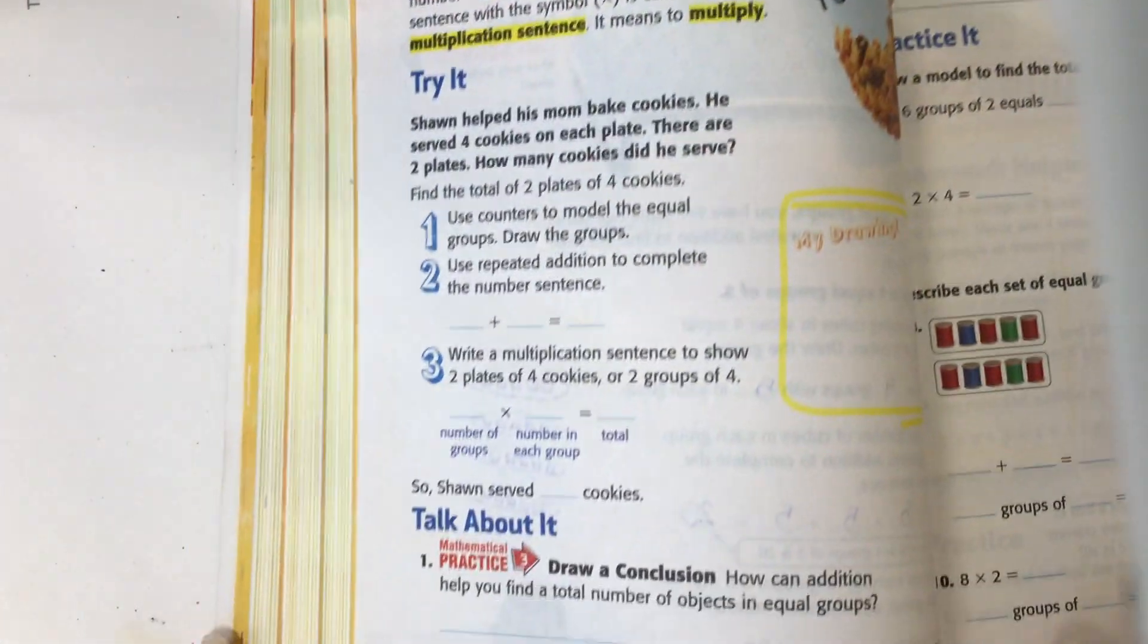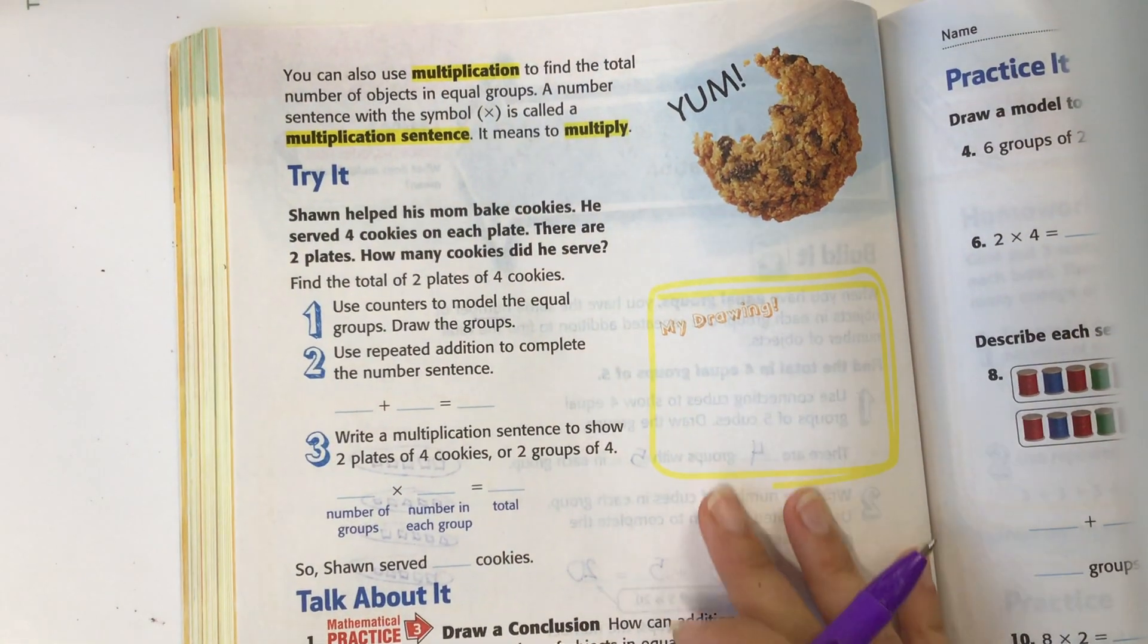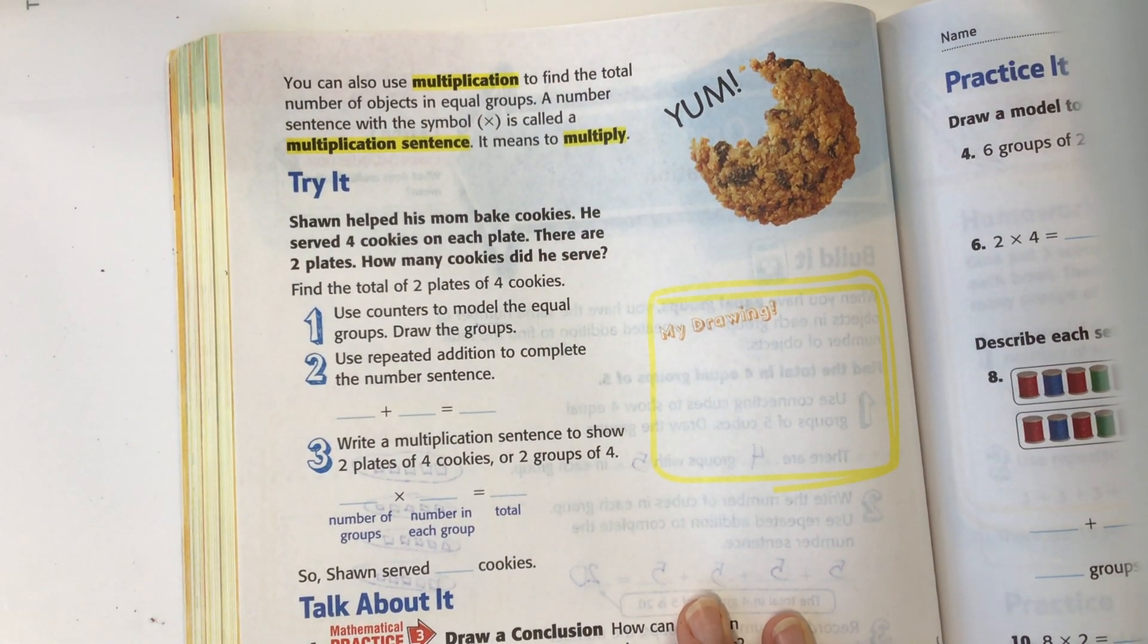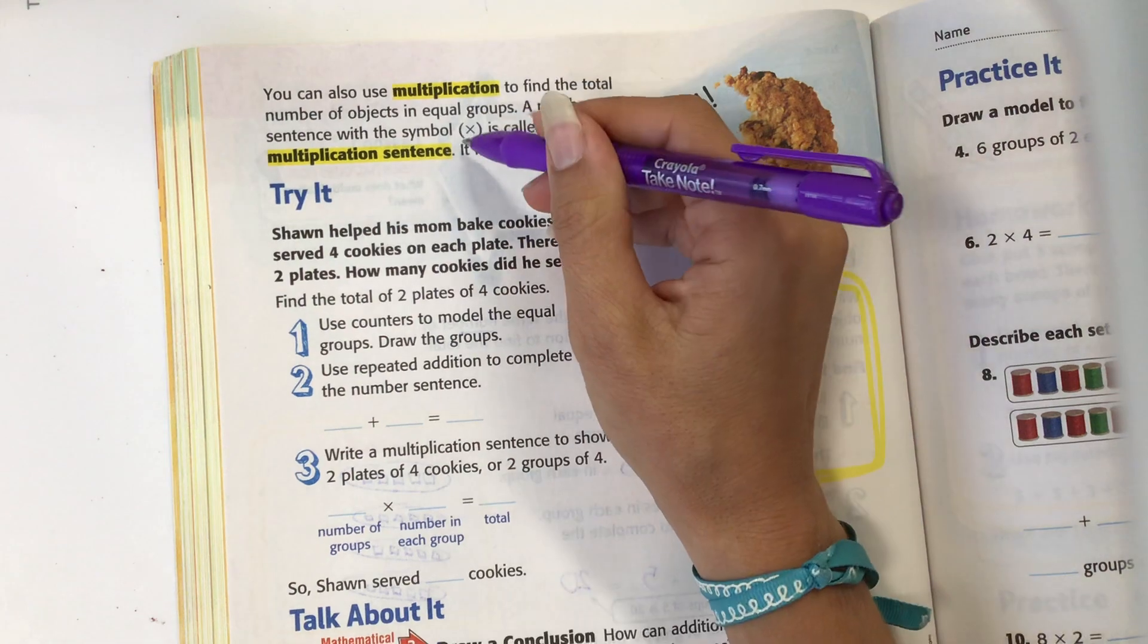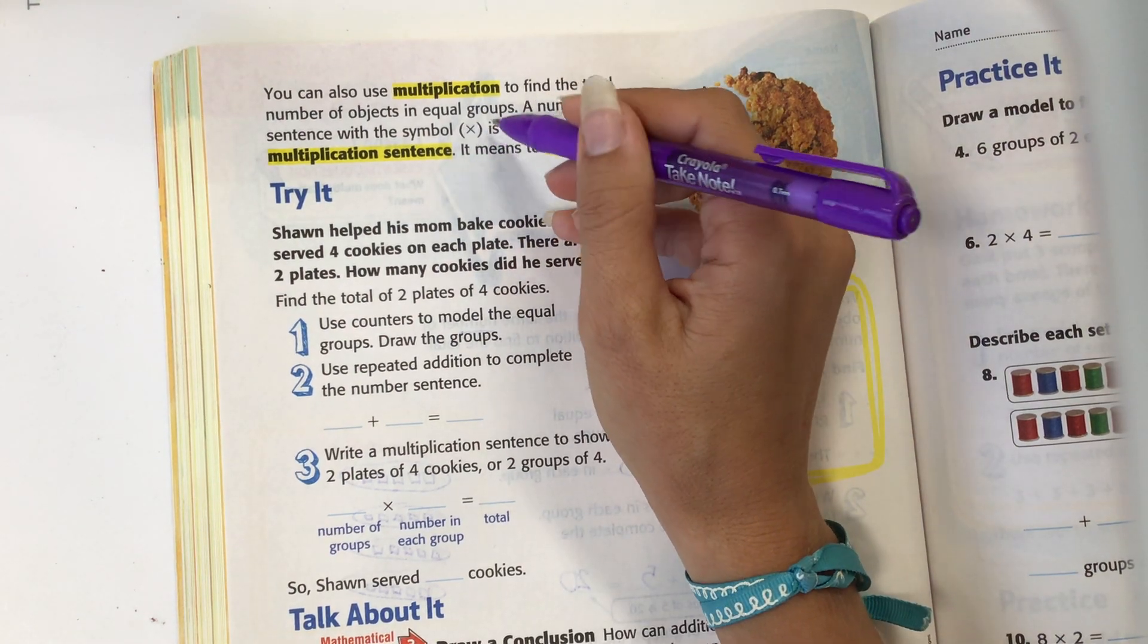Let's go to page 194. You can also use multiplication to find the total number of objects in equal groups. A number sentence with the symbol × is called a multiplication sentence. It means multiply. So this symbol × means times or groups of.